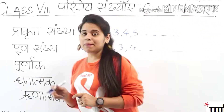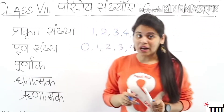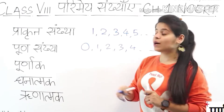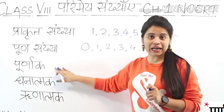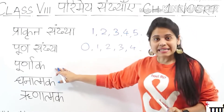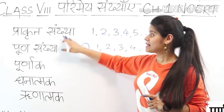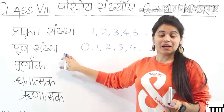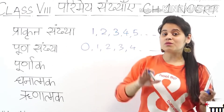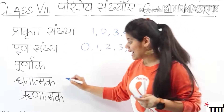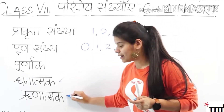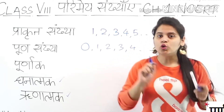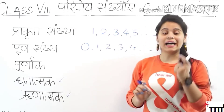After that, we have read about Ponaak — Integers. Ponaak includes both Prakat Sankhya and Poon Sankhya together as part of the integer set.